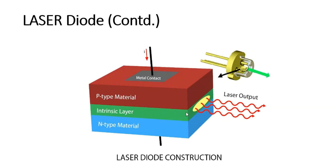This type of laser is called a homo junction type. In homo junction type, both P-type and N-type materials are made up of a single material — for example, gallium arsenide. There are also hetero junction types where the P-type and N-type materials are made up of different materials. The junction is called the active region, where effective combination of holes and electrons occurs and energy is emitted. When supply voltage is given, the laser diode operates and produces laser output.